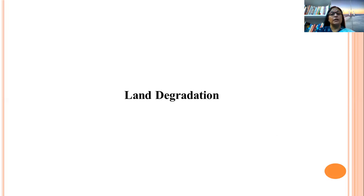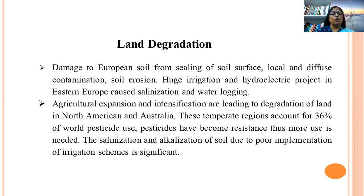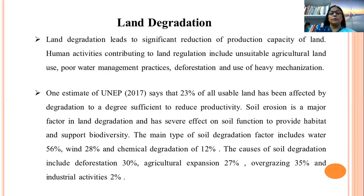Looking at land degradation: damage to European soil from sealing of soil, local and diffuse contamination, and soil erosion is significant. Huge irrigation and hydroelectric projects in Eastern Europe have also caused salinization and waterlogging. One estimate says that 23% of all usable land mass has been affected by degradation to a sufficient degree to reduce productivity.